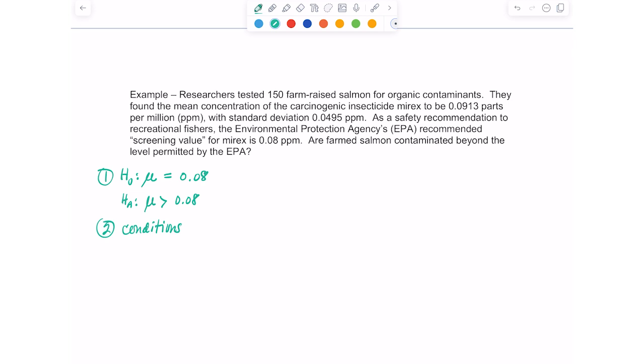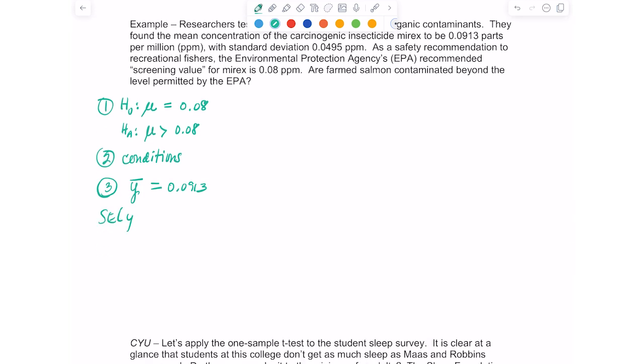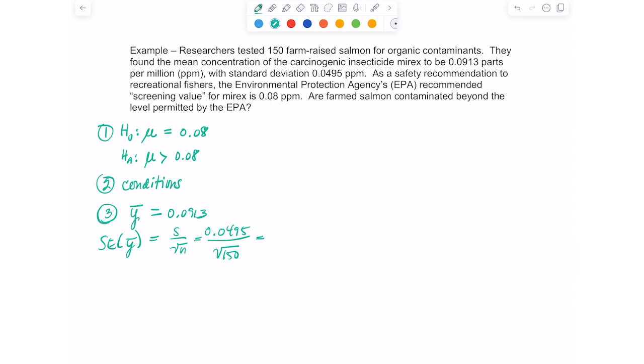So step three, let's write out our calculations and the statistics that we have. We know our sample mean here, they tell us, is 0.0913. So that's Y bar. And when I find my standard error, remember I don't know sigma, but I do know S and S here is 0.0495. And then I'm going to divide that by the square root of 150. And when you do that dividing, you end up with 0.0040.